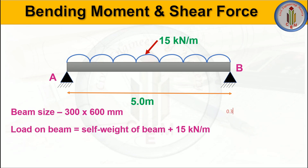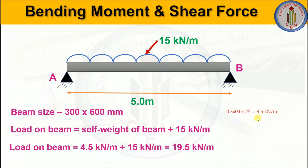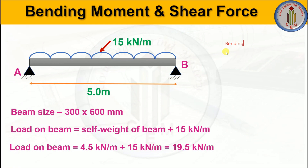The self-weight of the beam is calculated as 0.3 multiplied by 0.6 multiplied by 25 kilonewton per cubic meter (unit weight of concrete), giving 4.5 kilonewton per meter. So the total load on the beam is 4.5 plus 15, which equals 19.5 kilonewton per meter.